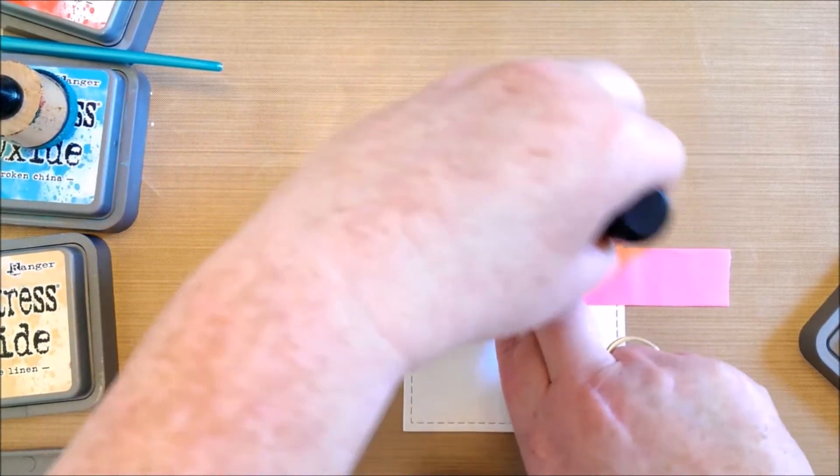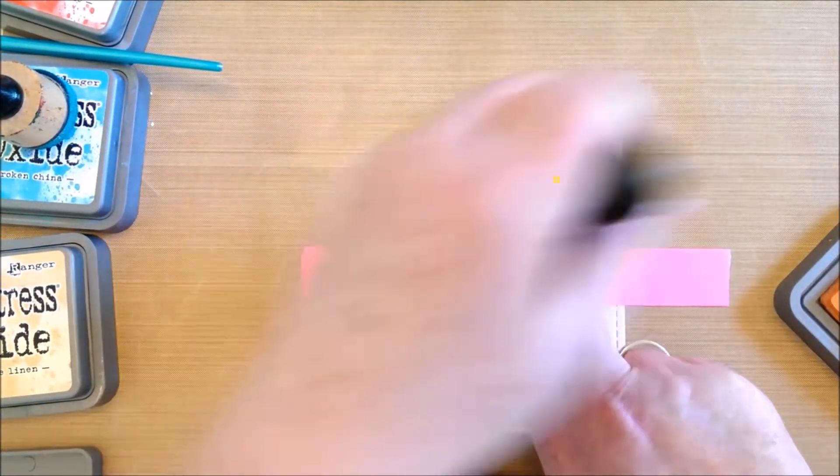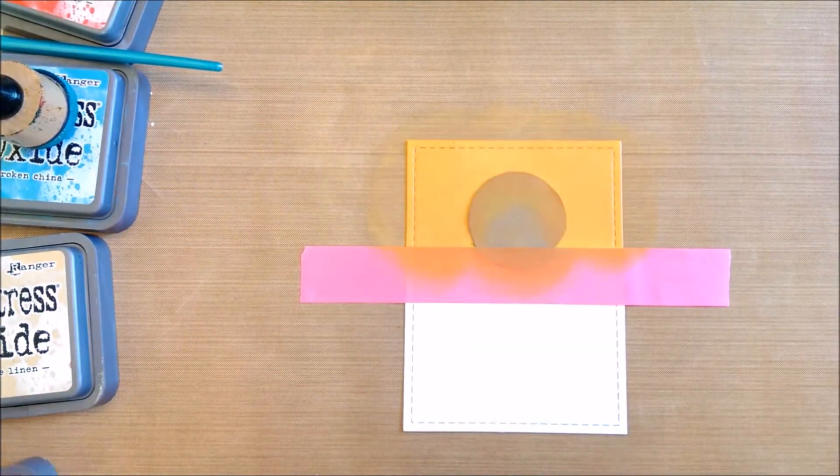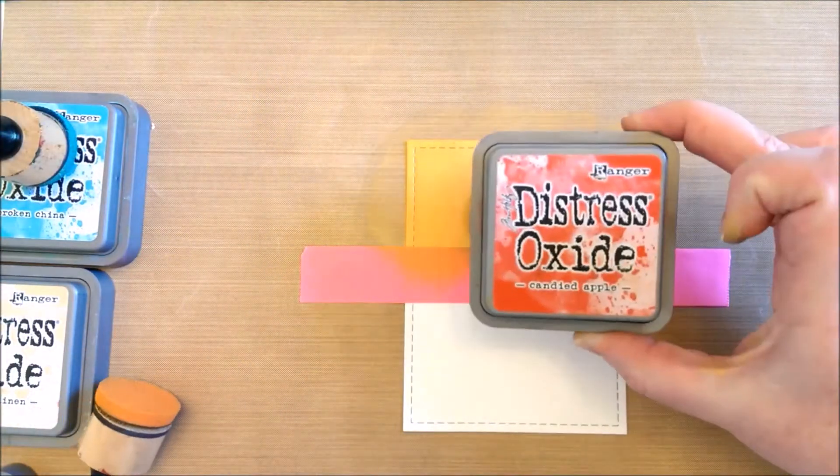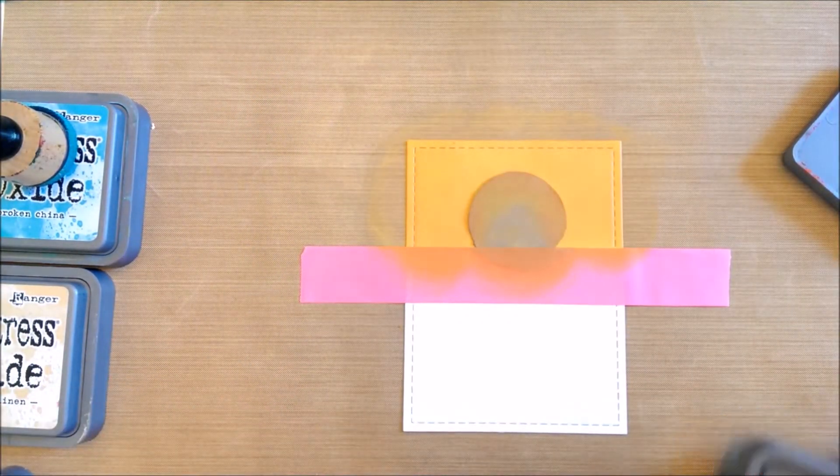I sponged some spiced marmalade around the paper circle.